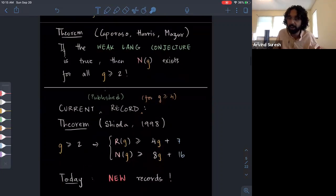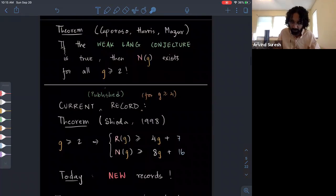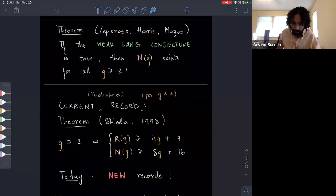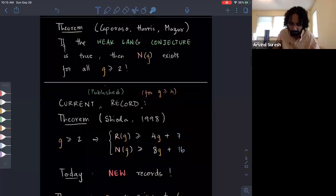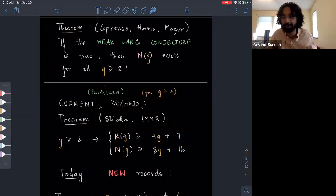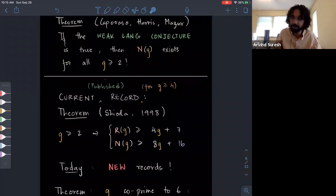We have this very exciting theorem, in my opinion, due to Caporaso, Harris, and Mazur. They prove that if the weak Lang conjecture is true, then this constant does indeed exist for all genus at least two. Let me remind you that the weak Lang conjecture just says that if you have a variety of general type, then the set of rational points is not Zariski dense in this variety. So what are the current records for how large these constants are? I mean, we don't know they exist, but we can at least produce explicit examples of higher rank curves or curves with many rational points to get lower bounds.